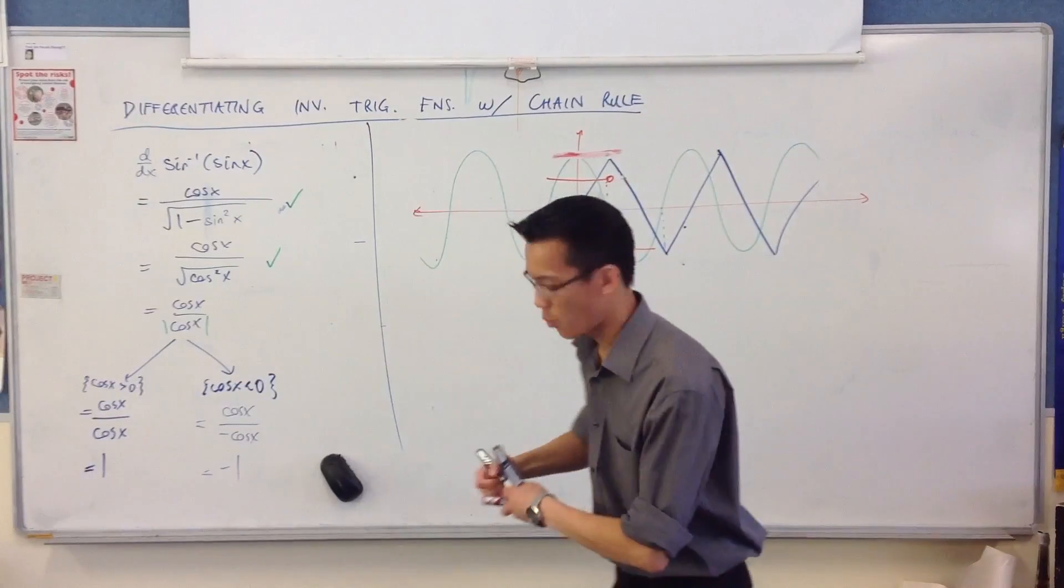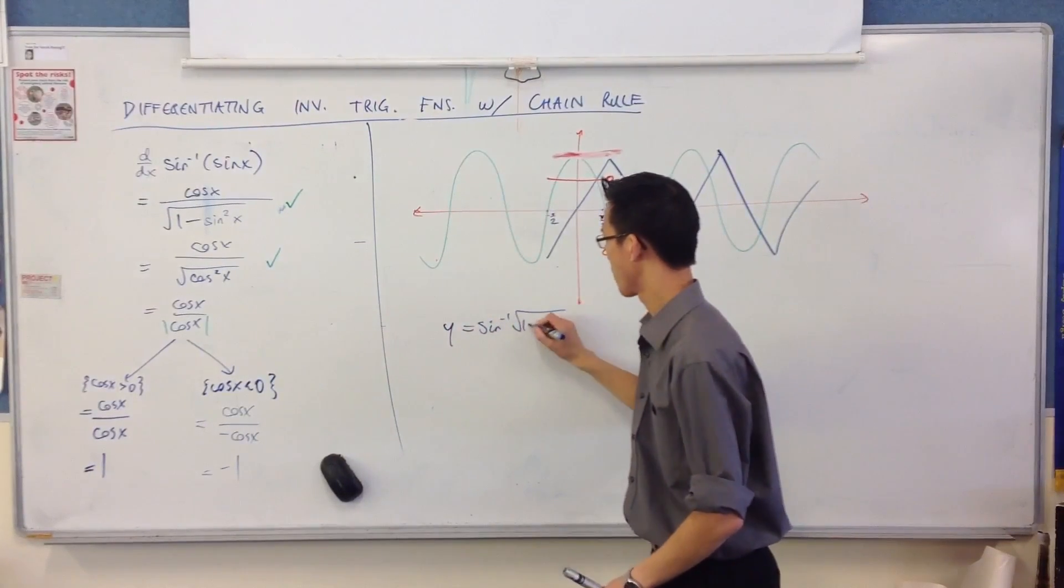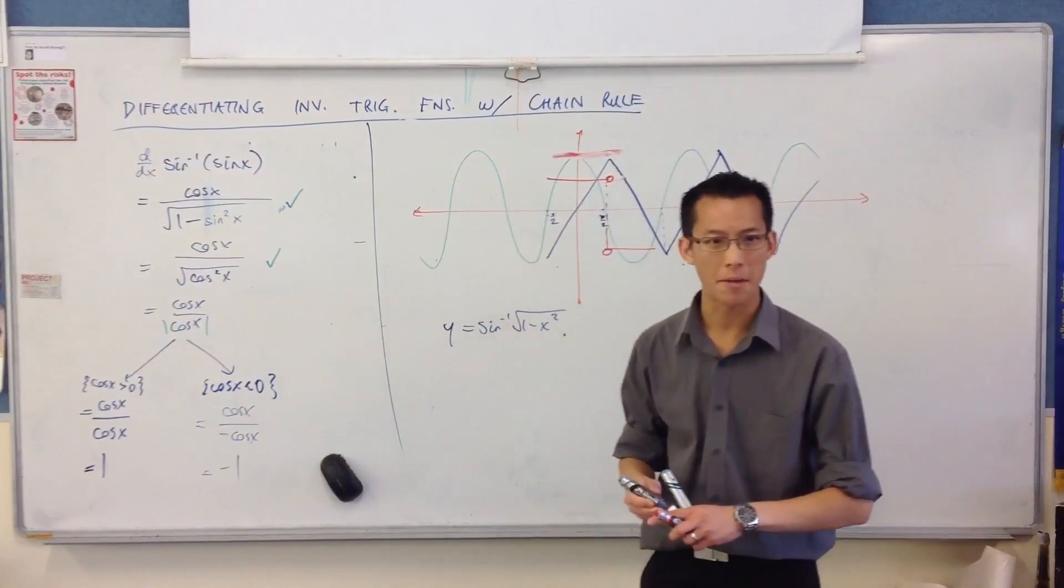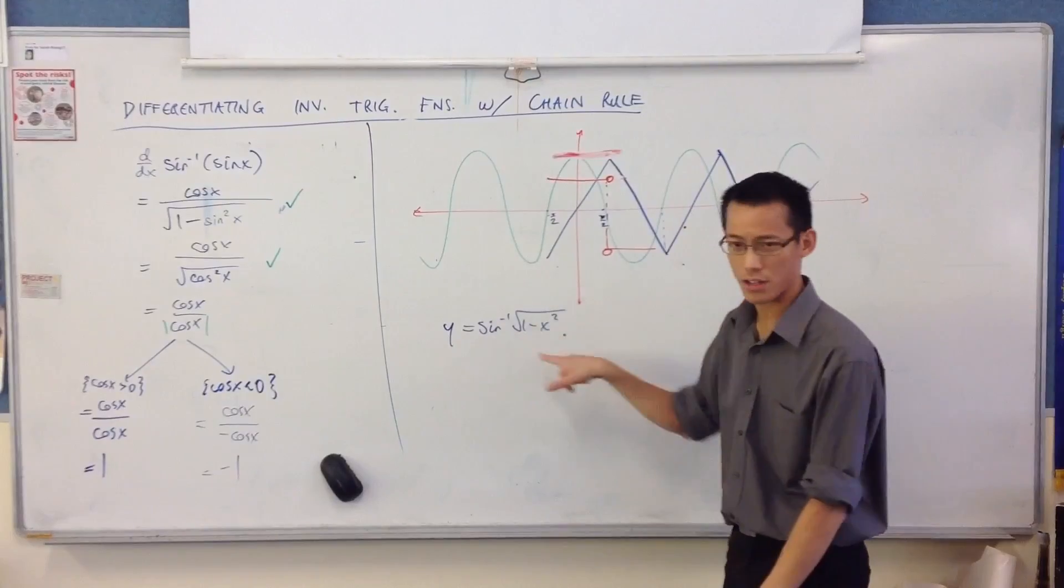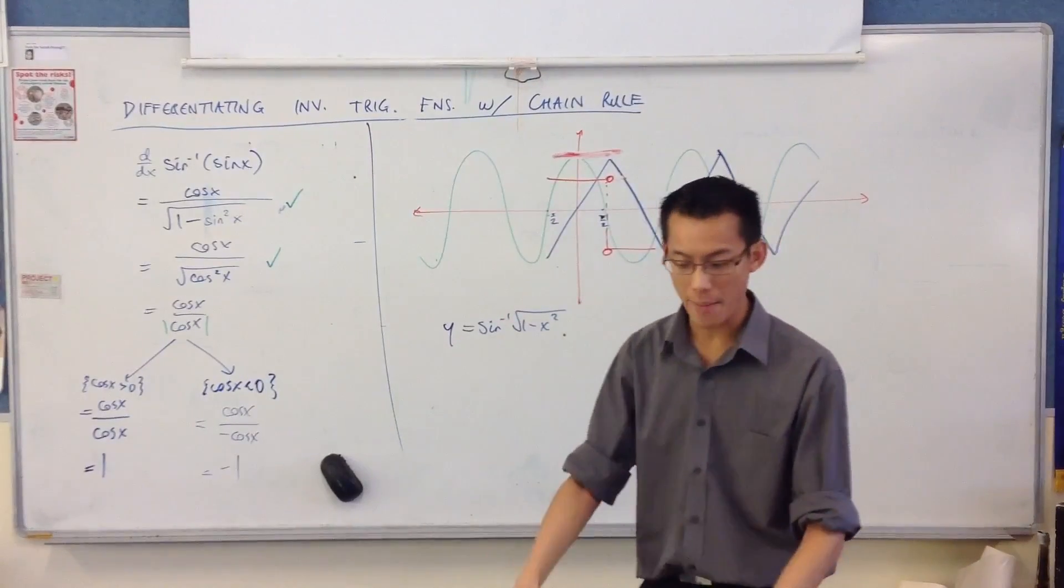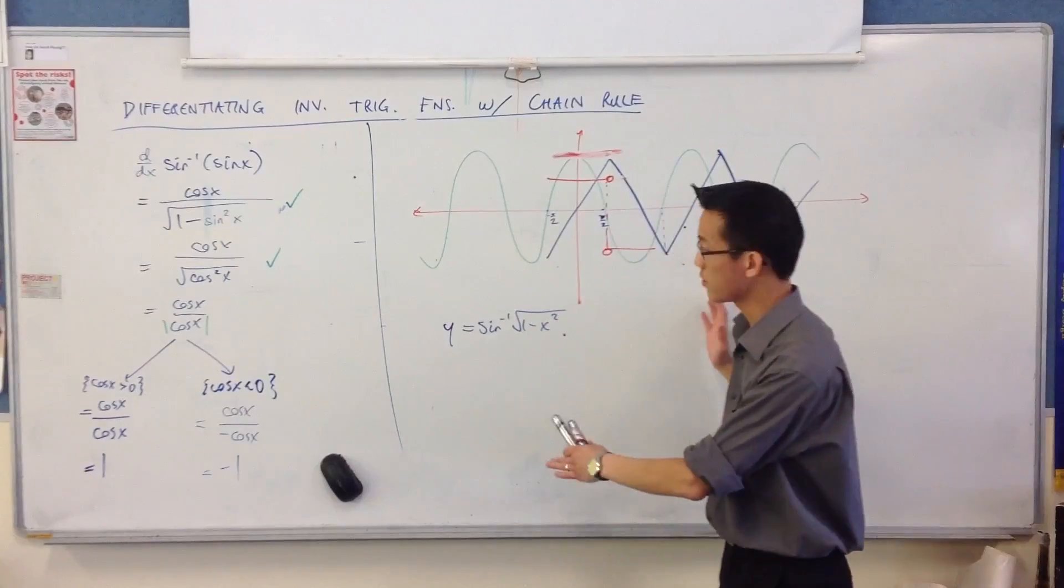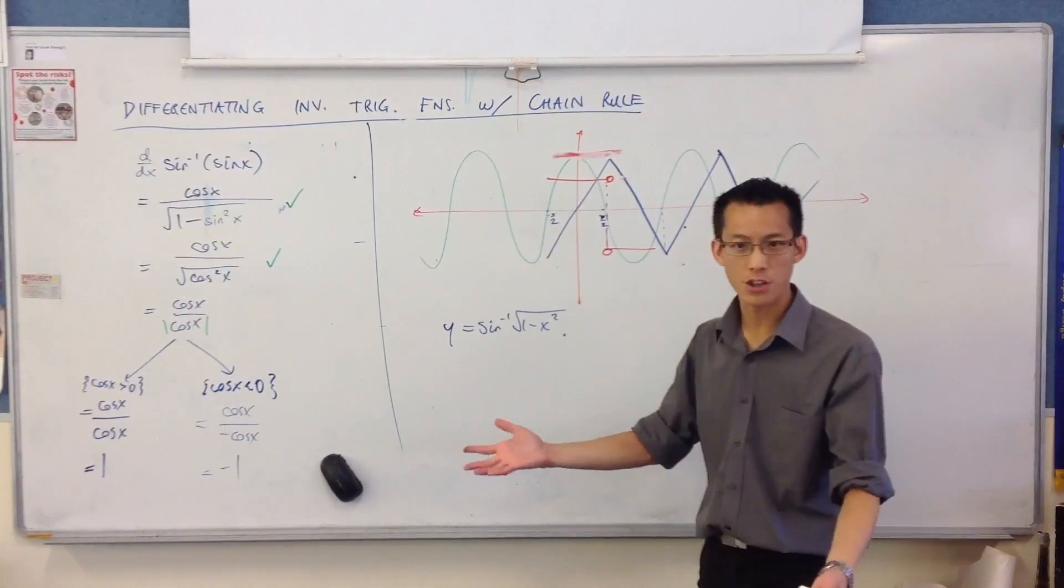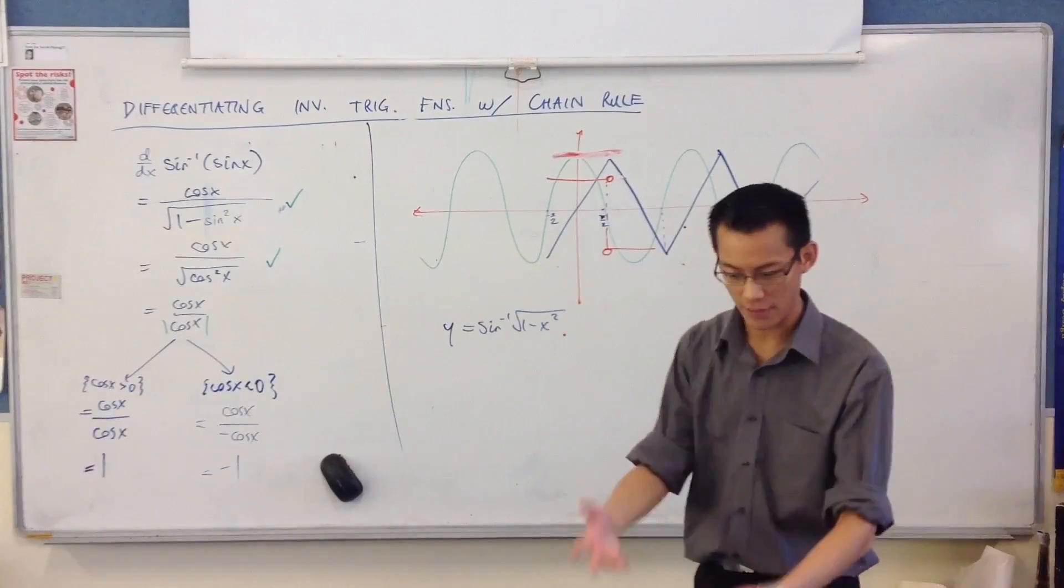Okay, so the function I wanted you to have a look at now was this. Now, some of you who have been working ahead might recognize it. It certainly has some suspicious characteristics about it. All the same, I'd like you to work out what its derivative is. And then, off the derivative, do you notice anything unusual? And can we graph it on the basis of that? So there's the function. Give it a go.